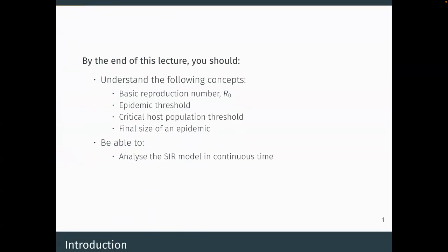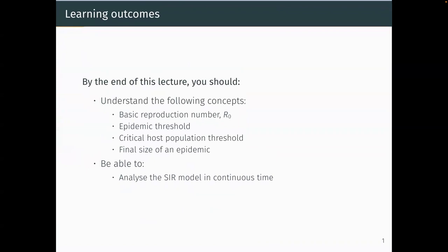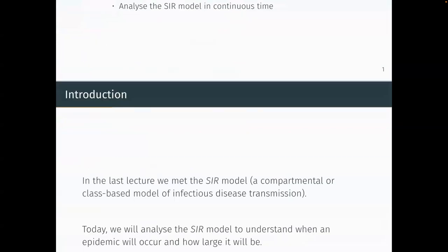At the end of the last lecture I mentioned R₀, the basic reproduction number. We'll be talking about that today, especially in the context of an epidemic threshold — when does an epidemic take off — ideas about the critical host population size or density needed to sustain an epidemic, and the final size of an epidemic.